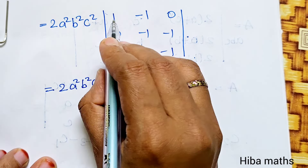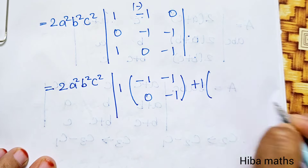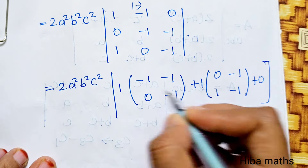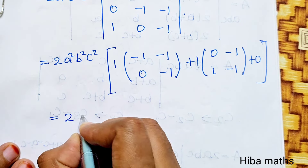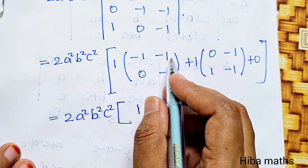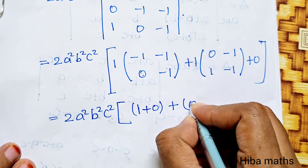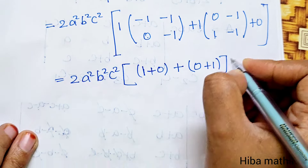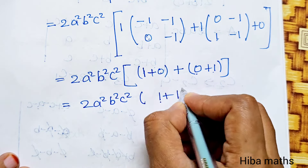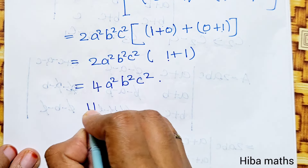Minus 1, minus 1, 0, minus 1. Already there's a minus, so it will be a minus. Then plus 1 into the row: 0, minus 1, 1, minus 1. Plus 0 into anything is 0. Next line: 2a²b²c² — 1 into anything same, minus 1 into minus 1 is 1, 0 into minus 1 is 0. So minus, plus 0 norma, plus 1 into: 0 into minus 1 is 0, 1 into minus 1 is minus 1, plus 1. That is equal to 2a²b²c² into 0 plus 1, 0 plus 1, 1 plus 0 plus 1 — that is 1 plus 1 is 2. 2 twos are 4. So the result is 4a²b²c².